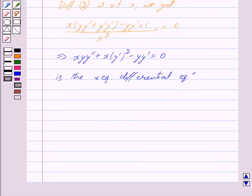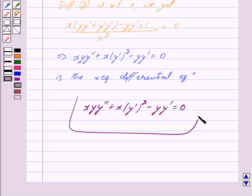Hence the required answer is xyy'' + x(y')² - yy' = 0. This is our answer. Hope you have understood the solution. Bye and take care.